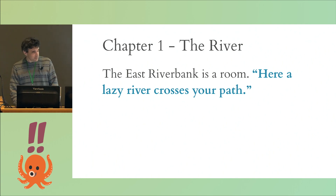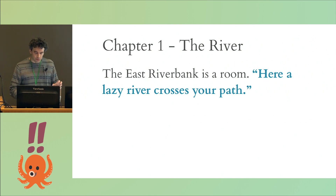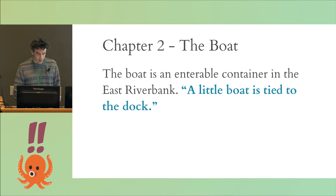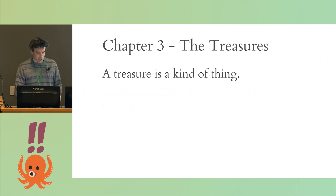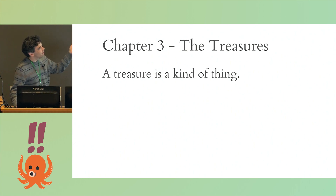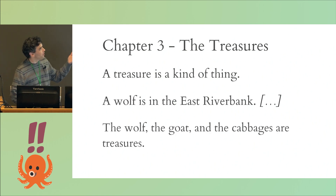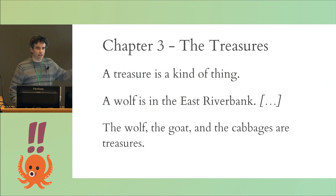You can also add some documentation. So we're saying: new room, it's called the east river bank, and Inform knows that a room is a particular type of object — it's a place where you can put stuff. The boat is an interval container; Inform knows what 'interval' and 'container' mean. There's a sort of class hierarchy in Inform, so we can define types by saying things like 'a treasure is a kind of thing,' and then we define a wolf and so on, and say the wolf, the goat, and the cabbages are treasures. That means exactly what it looks like — they're treasures.